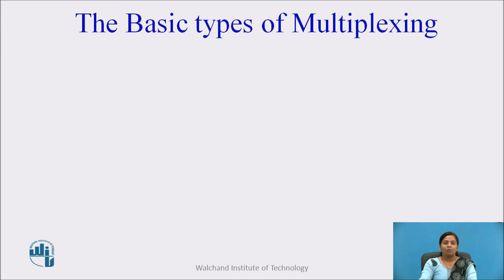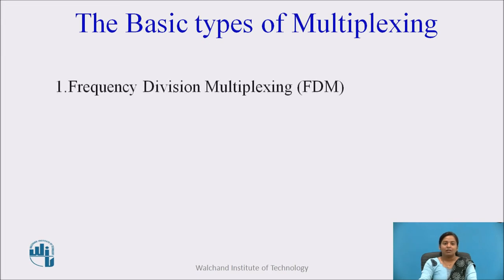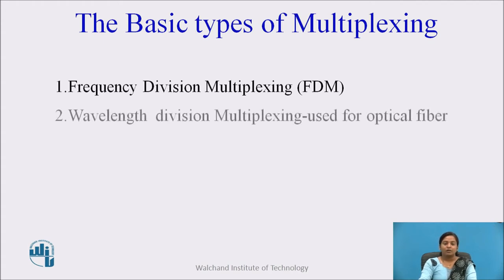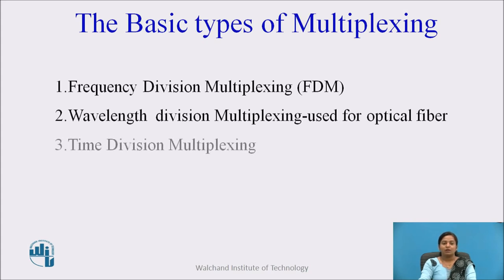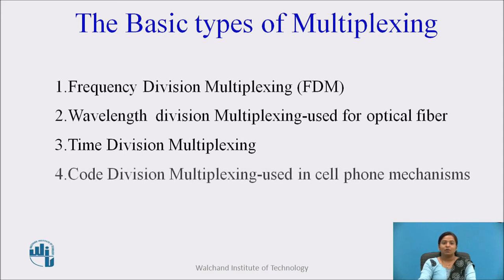The basic types of multiplexing: first, frequency division multiplexing (FDM); next, wavelength division multiplexing (WDM), which is basically used for optical fiber and optical communication; third, time division multiplexing, which can be used for analog as well as digital multiplexing systems; and next, code division multiplexing (CDM), which is used in cell phone mechanisms.